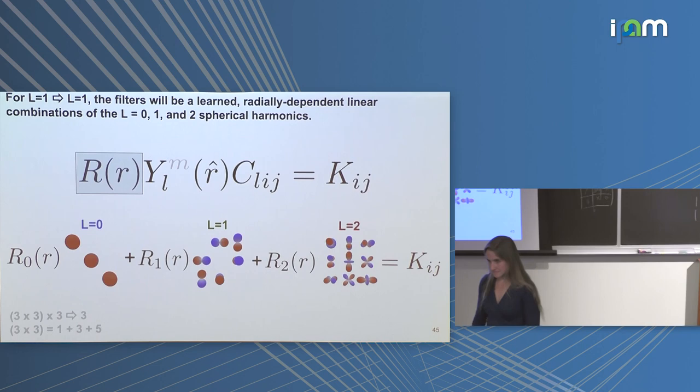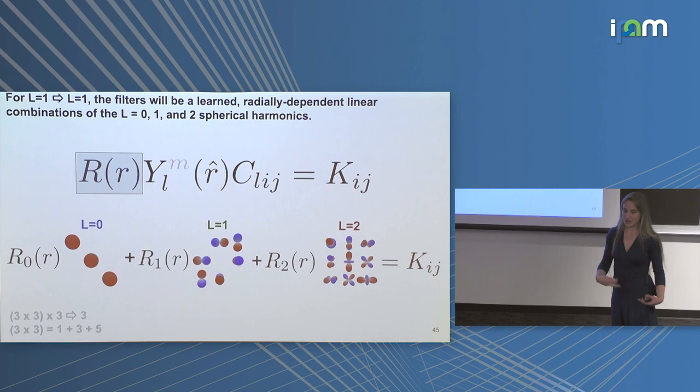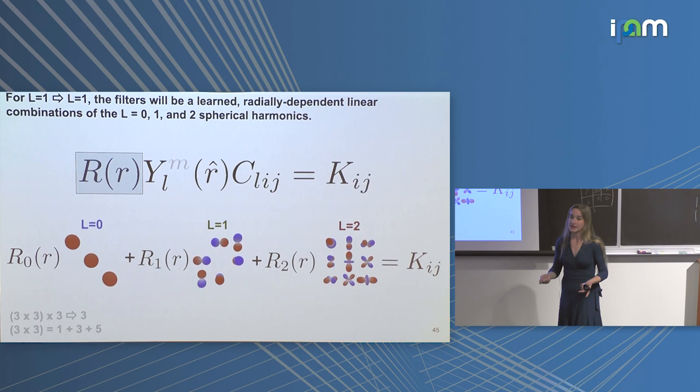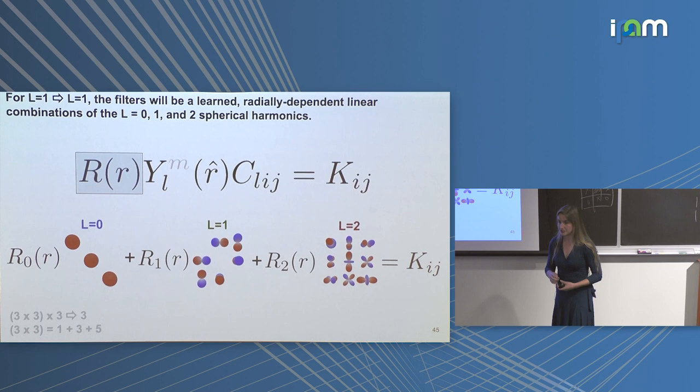Typically for computational simplicity you define a radial cutoff, and can make the basis functions die smoothly at that cutoff. Whether you use a harsh or smooth cutoff is application specific — you have complete freedom to choose whatever radial basis functions are appropriate for your application.